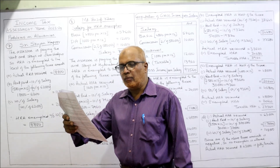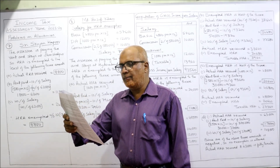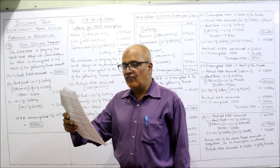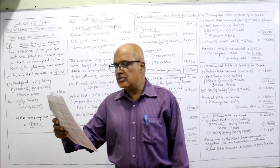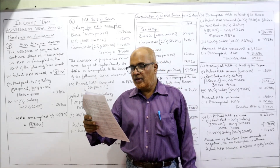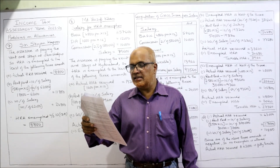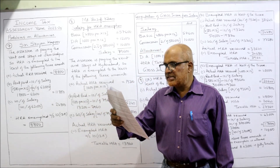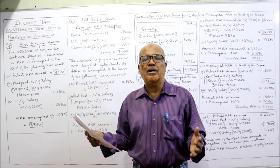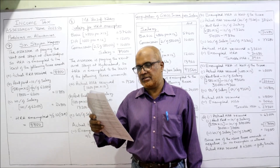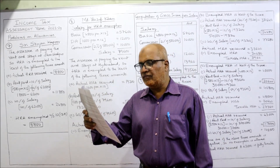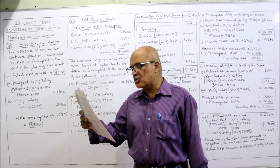Now see the 7th problem. Sri Srujan Kapoor is an employee of a limited company at Jamshedpur, receiving ₹44,000 as basic pay, ₹18,000 as dearness allowance forming part of salary for all retirement benefits, ₹6,000 as city compensatory allowance (CCA), and ₹8,800 as accommodation allowance — which is nothing but house rent allowance.